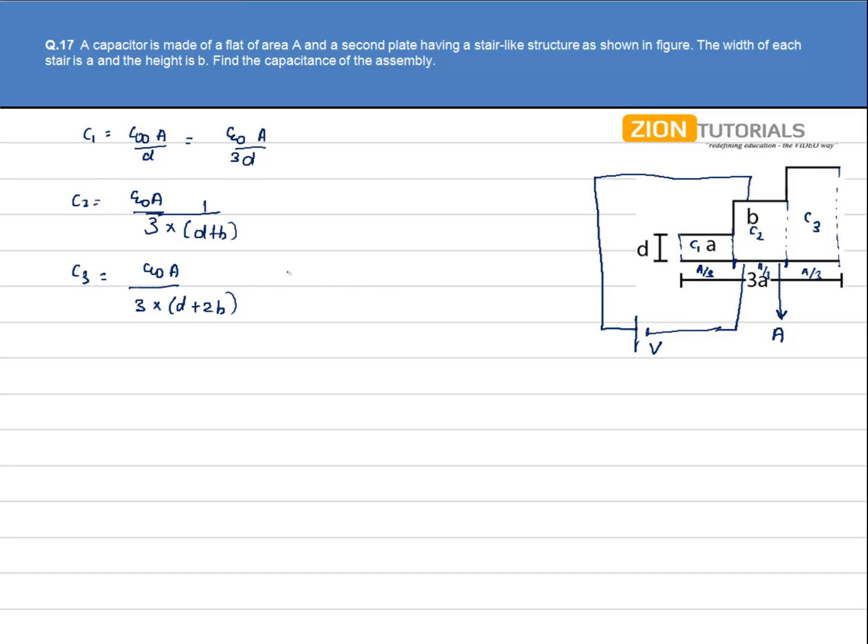Now since these three capacitances are in parallel combination, C equivalent will be straightforward: C1 plus C2 plus C3.